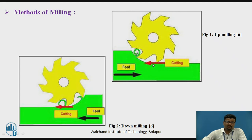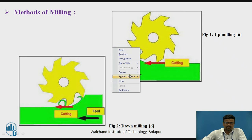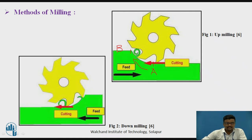Whenever the milling cutter touches the workpiece, the chip removal process starts. At the starting point A, chip thickness will be zero. But as the milling cutter rotates and moves across the workpiece, at point B the chip formation will be maximum. So in up milling, chip formation starts at zero at point A and reaches maximum at the end point B.